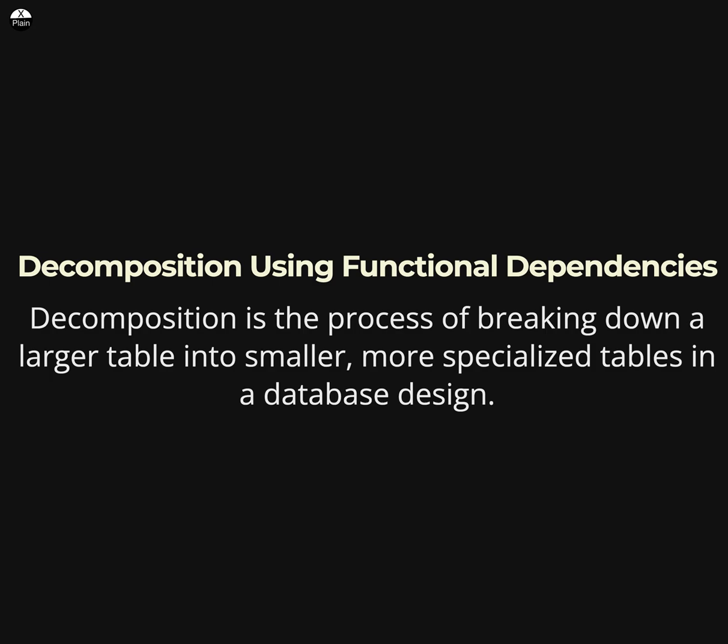Today we are going to talk about decomposition using functional dependencies, part of a database management system course. Decomposition is the process of breaking down a larger table into smaller, more specialized tables in a database design. One way to decompose a table is by using functional dependencies, which specify the relationships between attributes in a table.